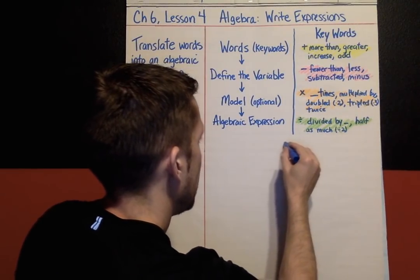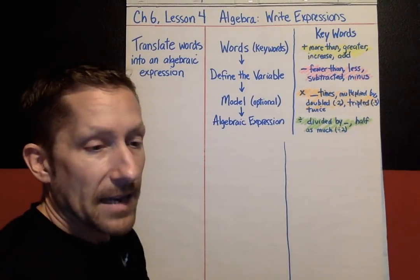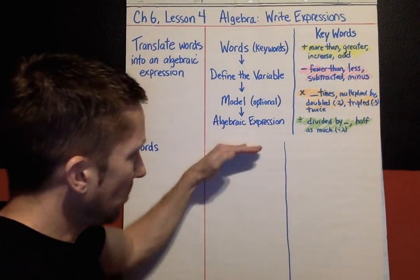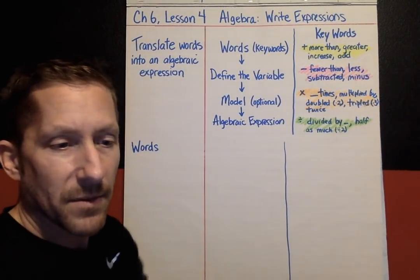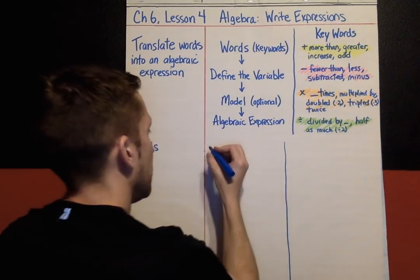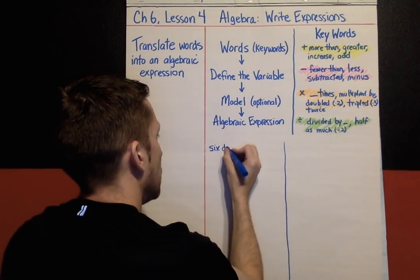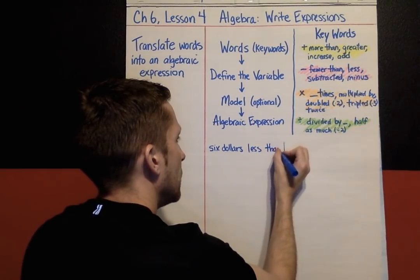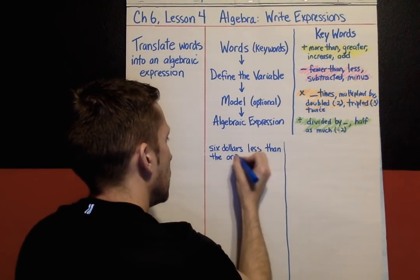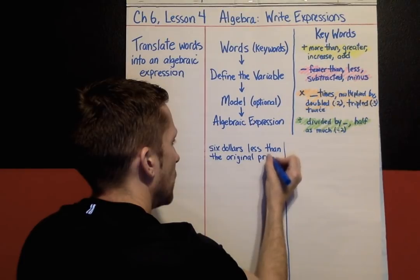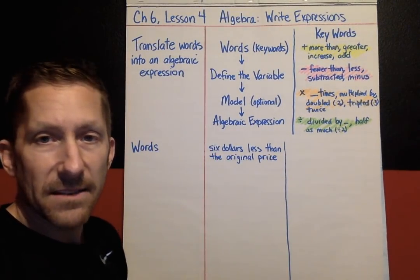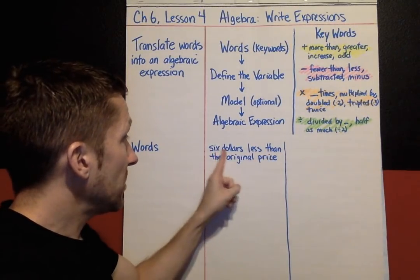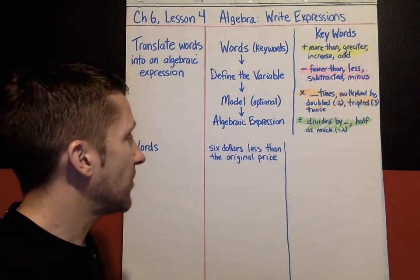Now let's put these into a couple of good examples. I'm going to draw a line down the middle for our two examples. The first example we're going to look at is: 'six dollars less than the original price.' So from there we're identifying keywords — 'less than' is the keyword. 'Six dollars less than' means we're going to be subtracting six from the original price.